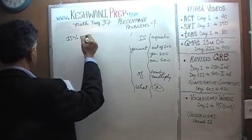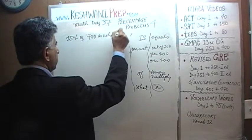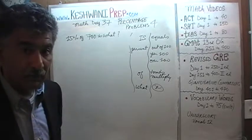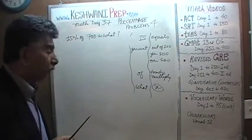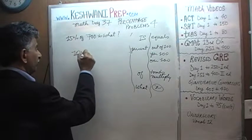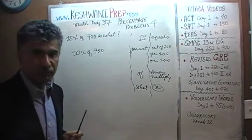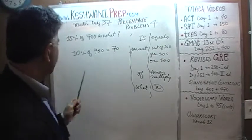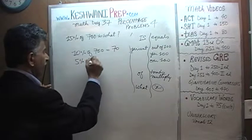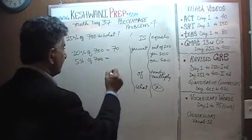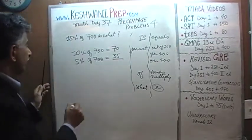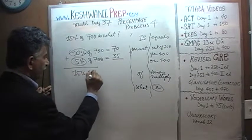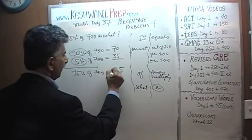Number 4: 15% of 700 is what? We can use a quick mental math approach. 10% of 700 is one-tenth of 700, which is 70. And 5% of 700 would have to be half of 70, which is 35. Adding 10% and 5% gives us 15%, so 15% of 700 equals 70 plus 35, which is 105.